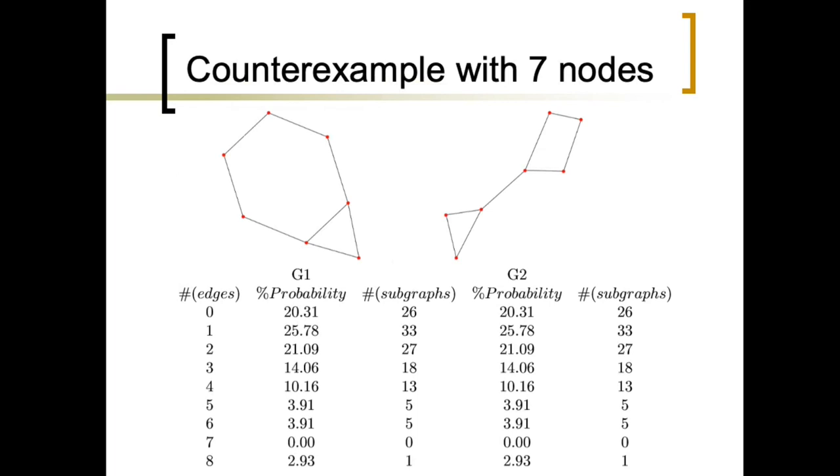But it is not as beautiful as we would like to be. Here we have, for example, a counterexample with seven nodes. That meet on what is said by our algorithm, even when they are not clearly isomorphic.